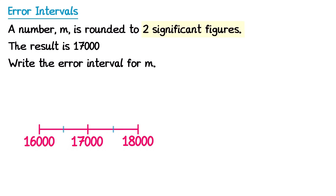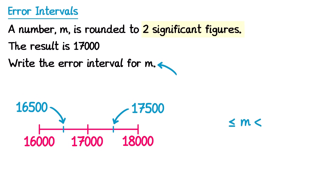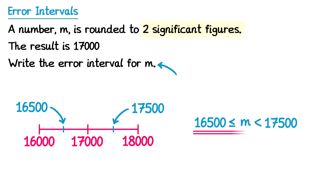Then we need to place a number above and below that has been rounded to two significant figures. The one immediately below would be 16,000 and the one immediately above would be 18,000. In between 16,000 and 17,000 is 16,500, and in between 17,000 and 18,000 is 17,500. We form the error interval using the letter M: M, the inequality symbols, lower bound 16,500, and upper bound 17,500.